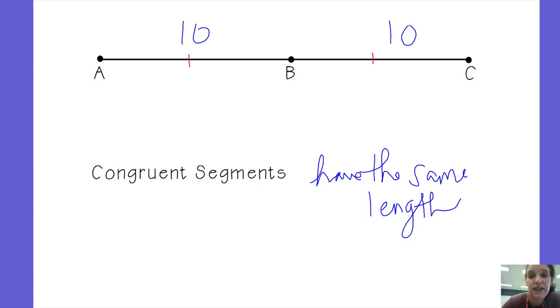We put the same number of tick marks, so I could have used two tick marks, but if I used two tick marks on AB, I would need to use two tick marks on BC. And you can increase the number of tick marks as your figures get more complicated, but you just want to use the same number of tick marks on the segments that are congruent. And the symbol for congruent is an equal sign with a little squiggle on top.